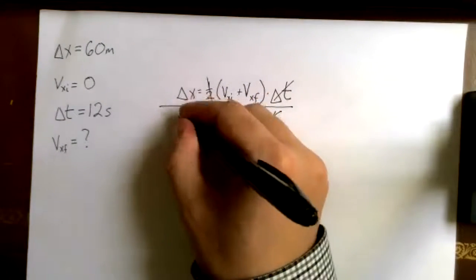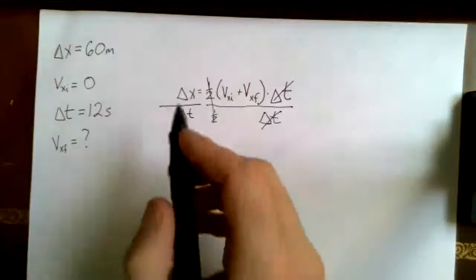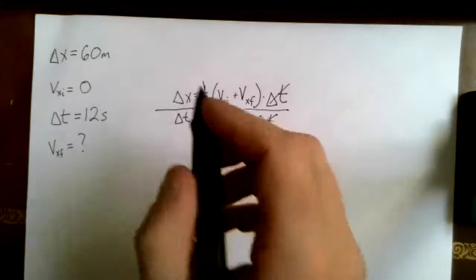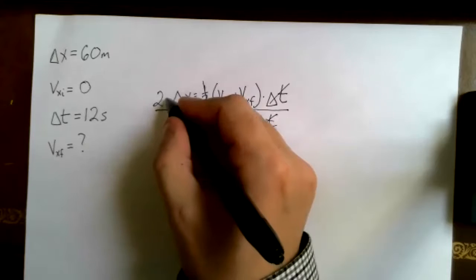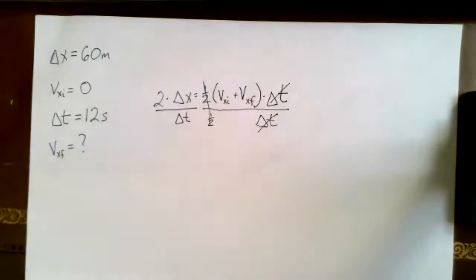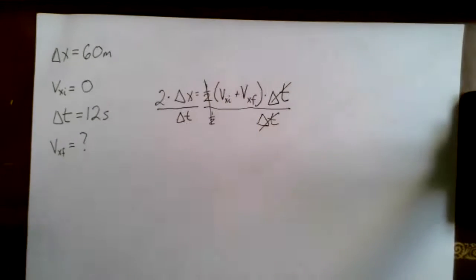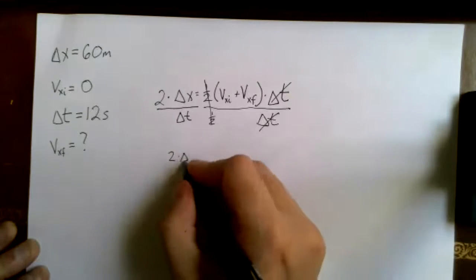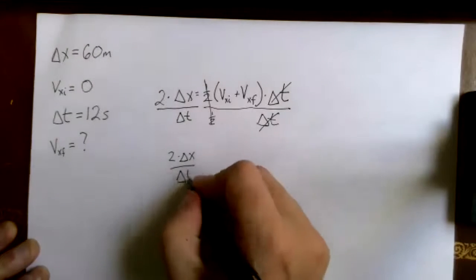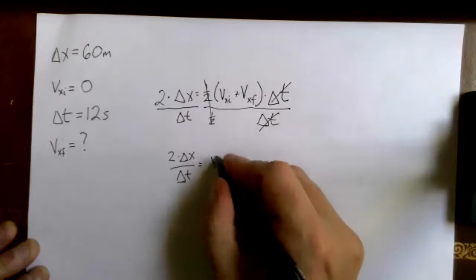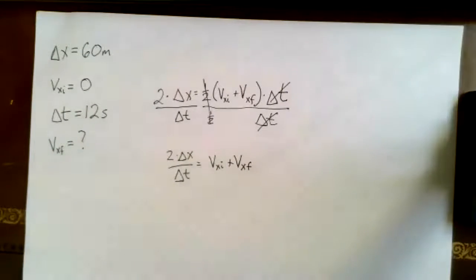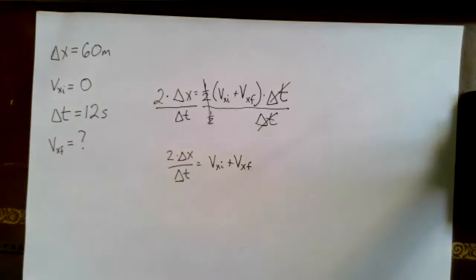I have to do that to the other side as well, so Δt on the bottom there. And instead of doing one-half on the bottom, it's the same as multiplying by two. It's easier not to screw up if you multiply by two instead of dividing by one-half. So I end up with 2×Δx÷Δt equals V_xi + V_xf.